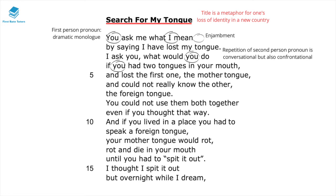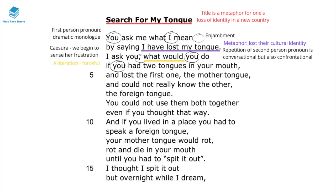The enjambement at the end of the first sentence speeds up the pace of the poem. The metaphor 'I have lost my tongue' is really powerful because it shows that the speaker feels they've lost their cultural identity by shedding their original language and learning a new one. The phrase 'I'll ask you' shows frustration and anger, and the alliteration in 'what would you do' is forceful and accusatory, showing their anger at having to shed their mother tongue to adapt to a new culture.